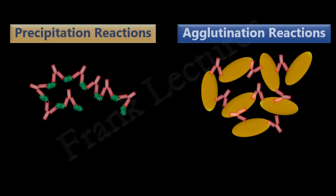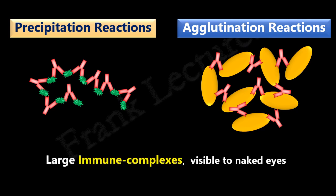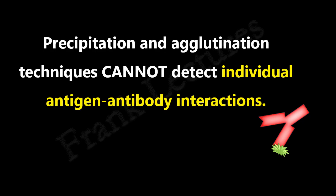In previous video lectures, we covered immunotechniques based on precipitation and agglutination reactions. There we saw that antigen-antibody reactions result in the formation of large immune complexes, which are large enough to observe with the naked eye. But how do we detect the presence of antigen or antibodies when antigen-antibody interactions occur but are not visible? This may be because the test antigen or antibody is present in very low concentration. Precipitation and agglutination immunotechniques will not detect individual antigen-antibody interactions.